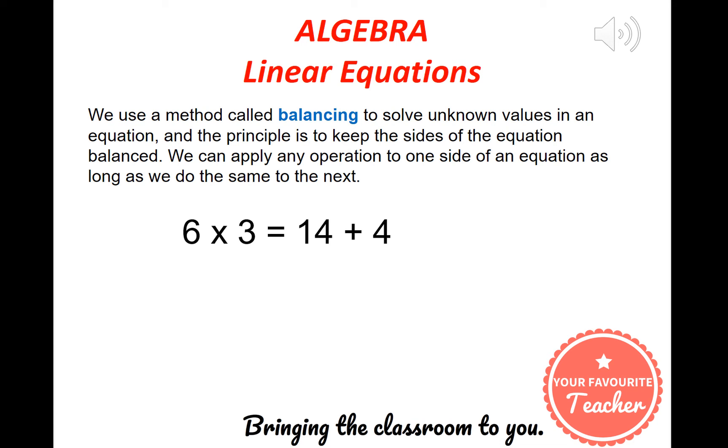So let's take a look at a simple example. If I have 6 times 3, which is 18, is equal to 14 plus 4, that equation makes sense. However, if I minus 3 from the left hand side, the left hand side now becomes 15, and I cannot say that 15 is equal to 18. So what I need to do is do the same operation, minus 3, on the right hand side. So now I can write 15 equals 15.